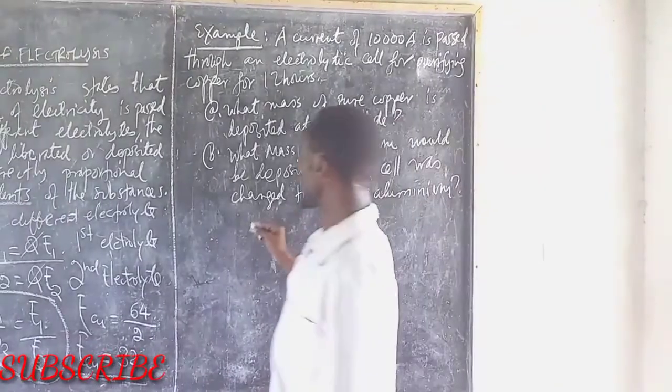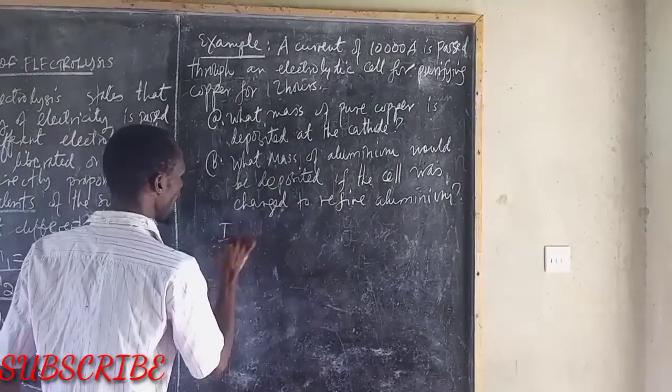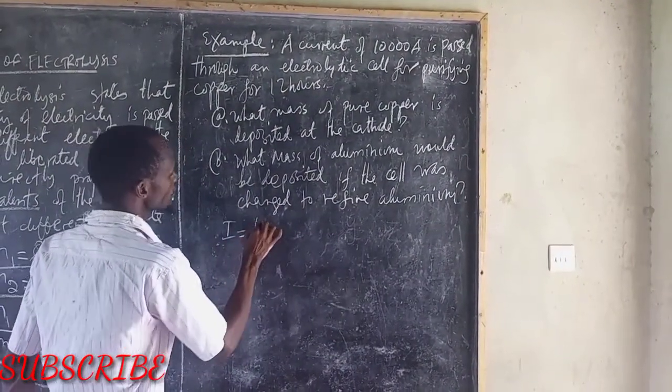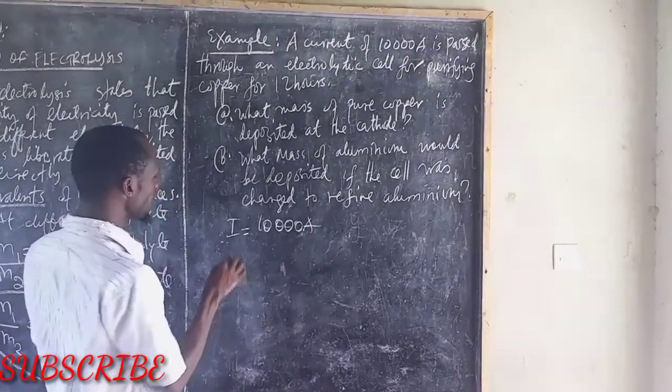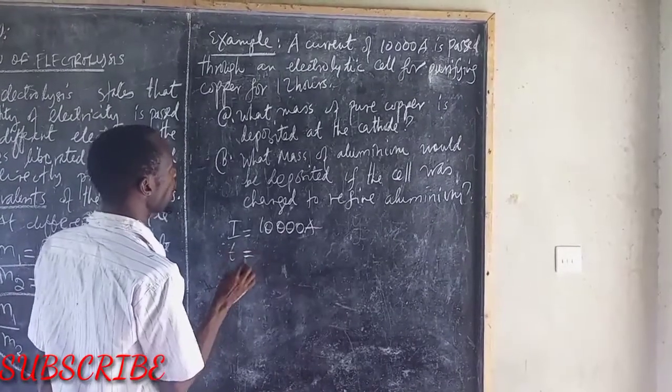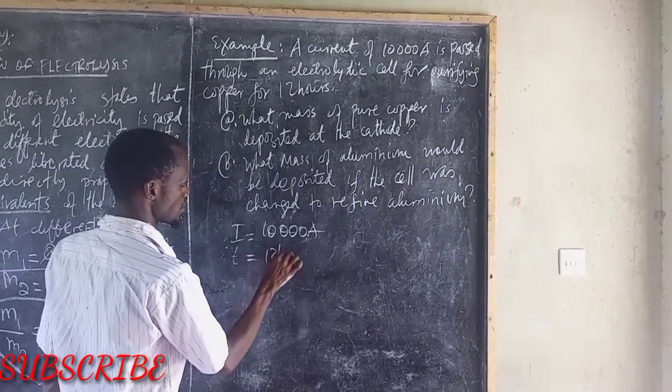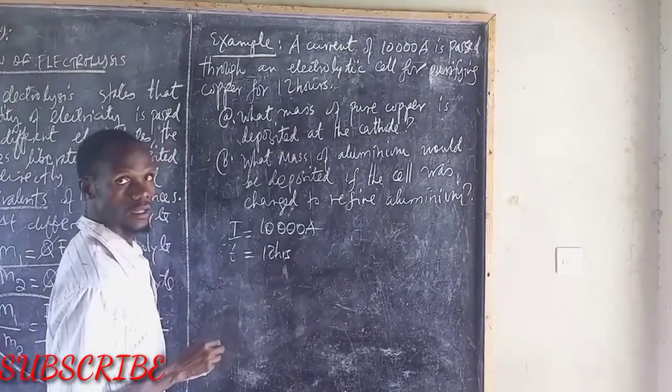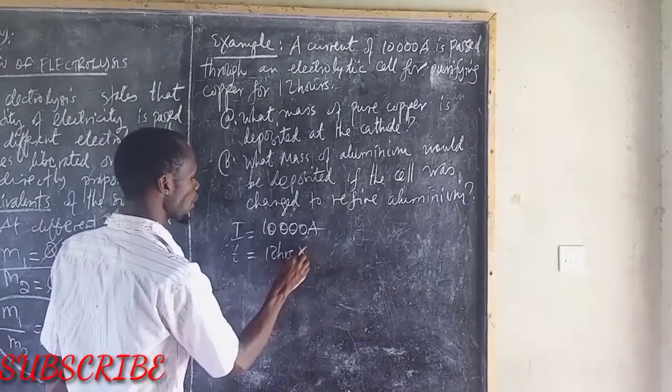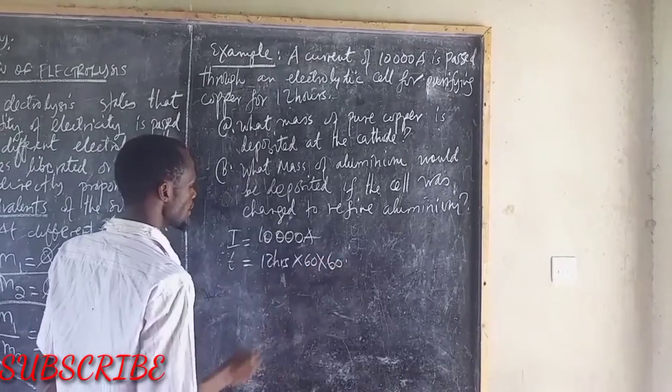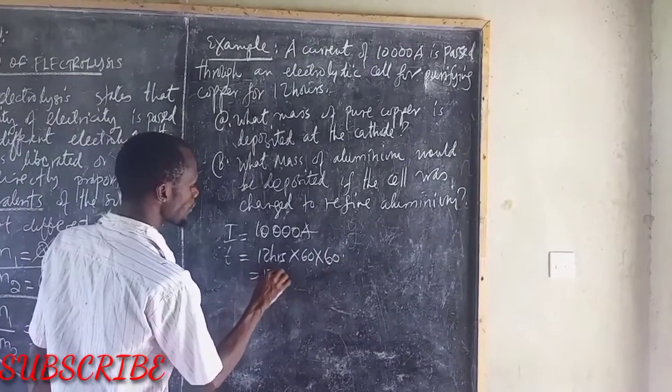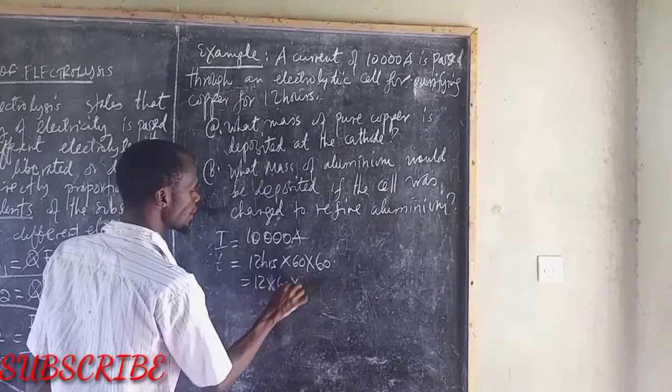From the equation we are having current. Current is equal to 10,000 Ampere. And then time is equal now to 12 hours, times 60 times 60.